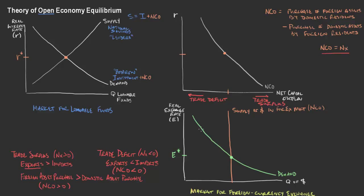There is also some demand here. We know that net capital outflow equals net exports — it has to. We've talked about how this represents the goods and services being purchased or traded, and that must be equalized by the financial assets, the currency that is being traded. So the demand here is really the net exports.